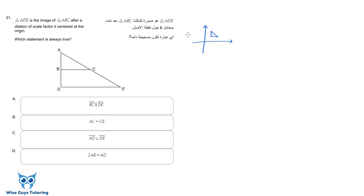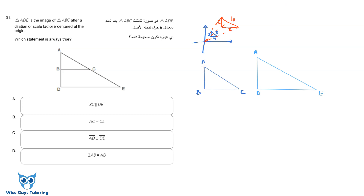Dilation is a geometric transformation where you have one original triangle and you dilate it — usually it's either enlargement or shrinking. What you end up with is an image, which is called a similar triangle. When we say similar, it means all three angles are the same, which makes all pairs of corresponding sides proportional.